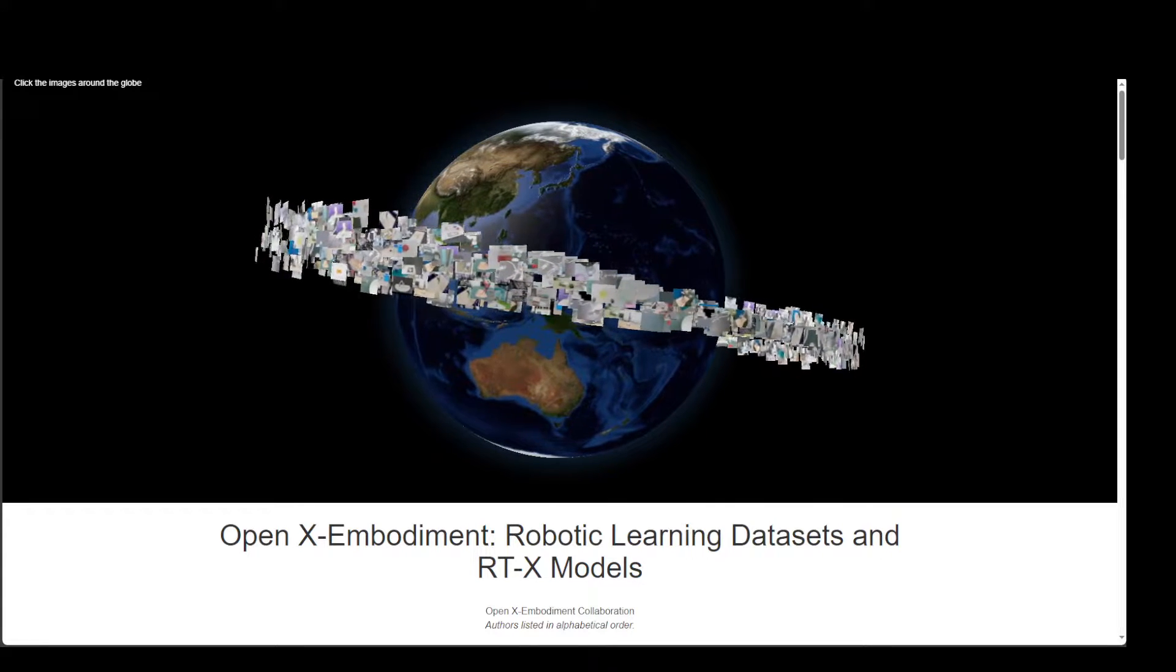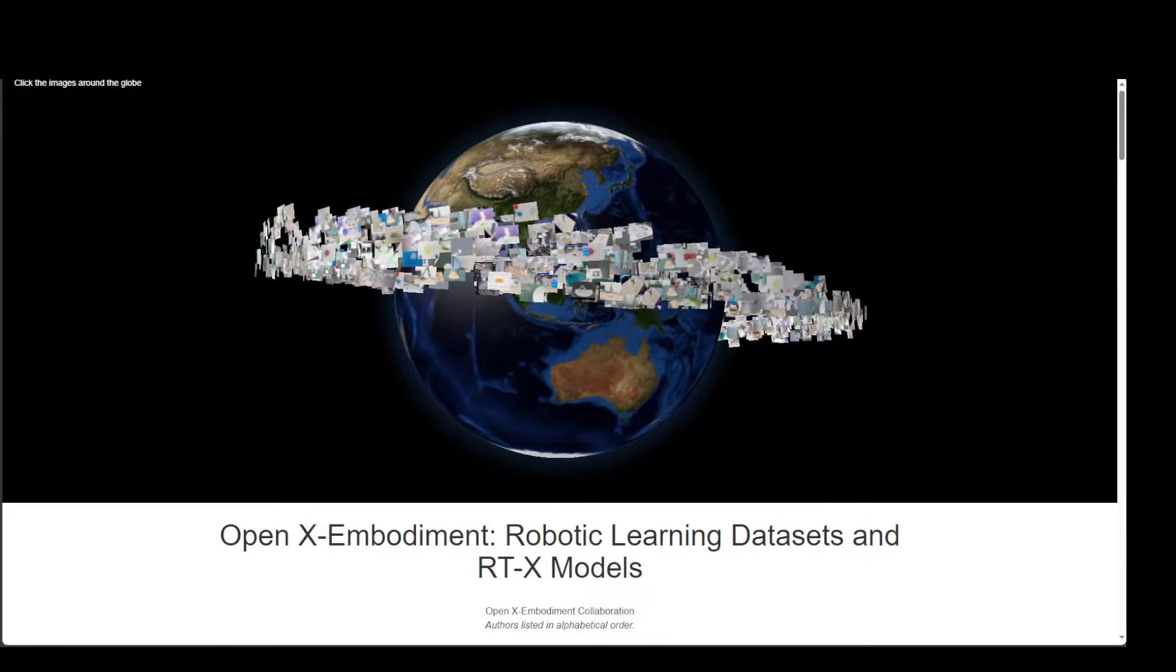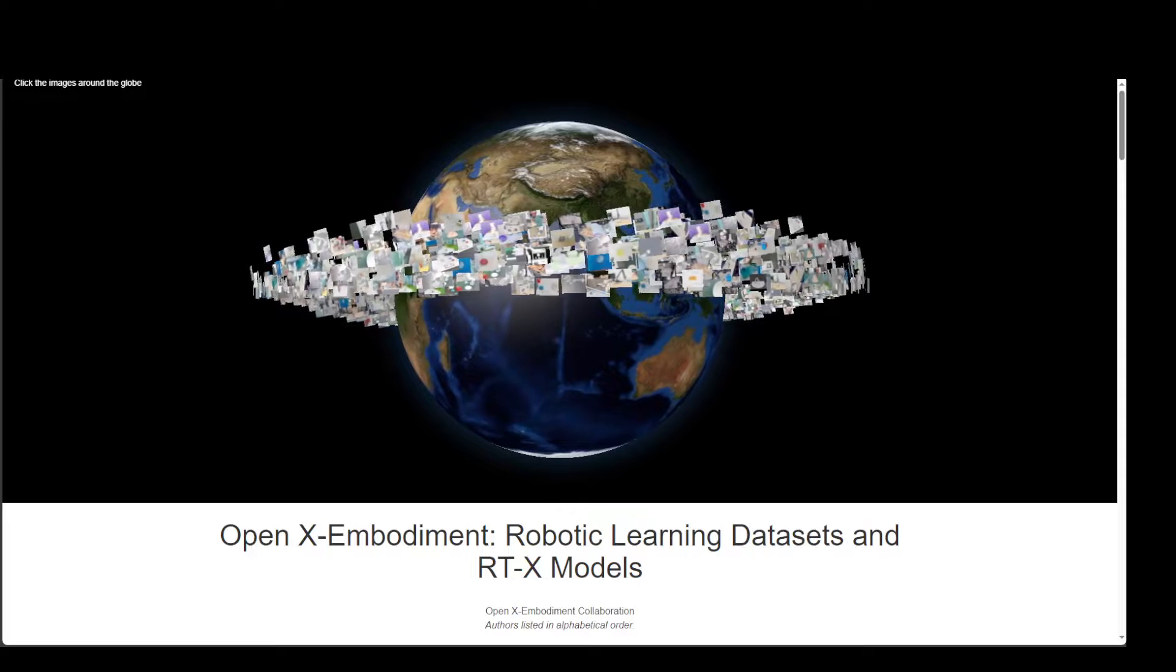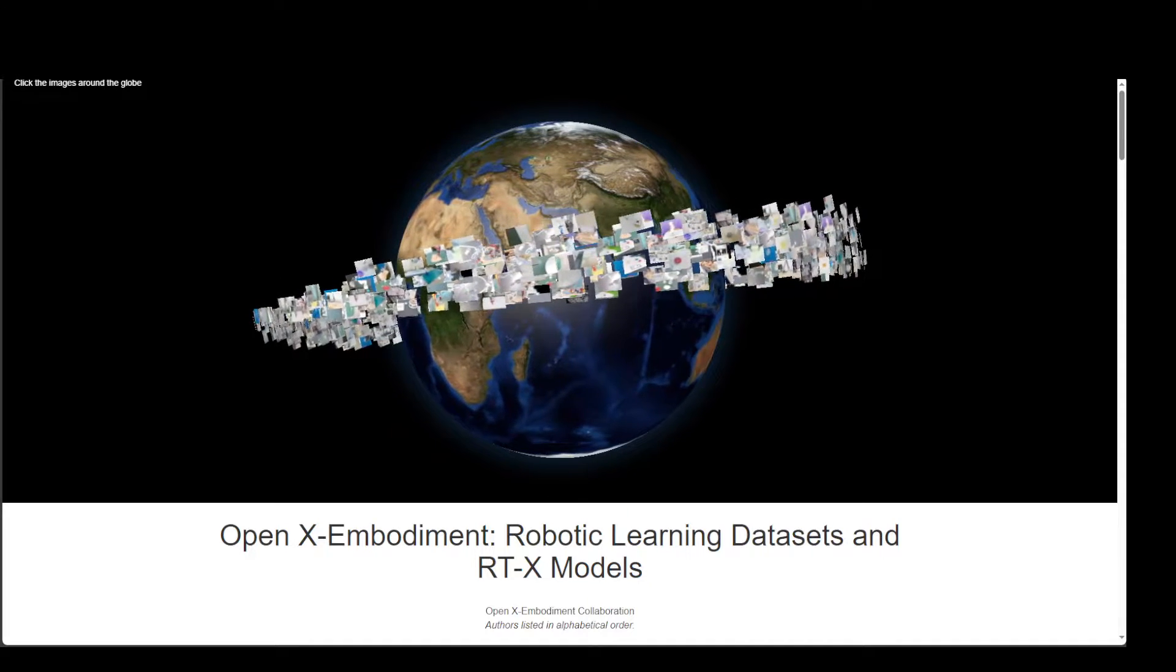In a very exciting development, DeepMind, in partnership with 33 academic labs, has unveiled this OpenX embodiment dataset, which has been sourced from 22 robot types and the RT1X model.